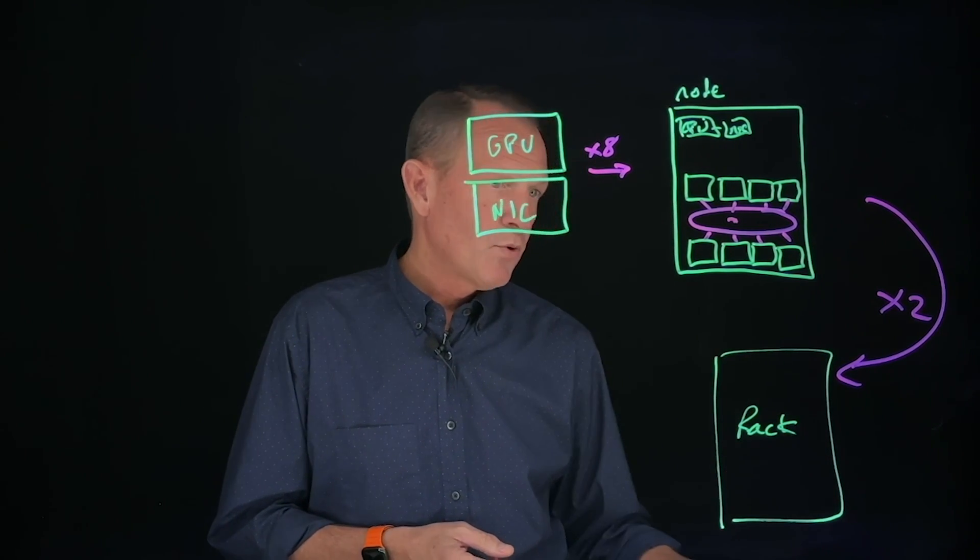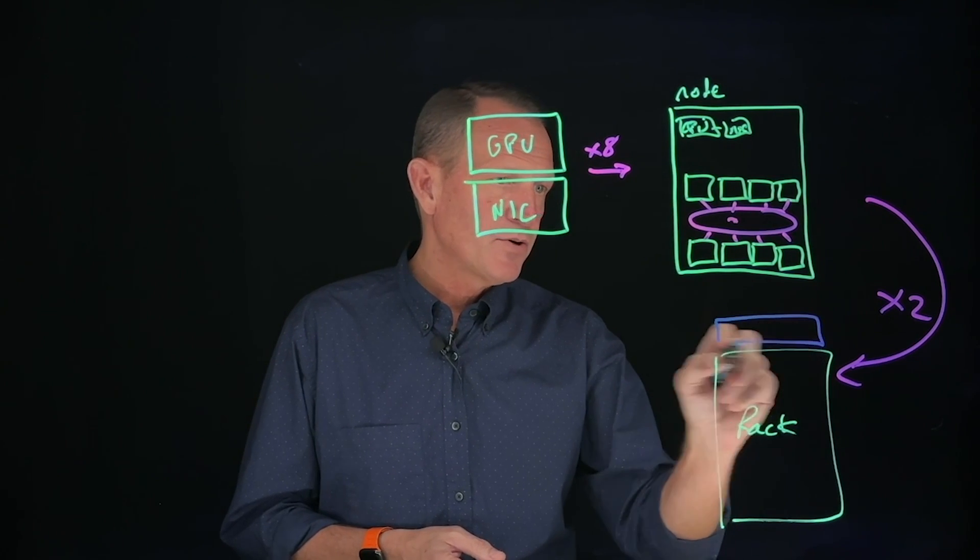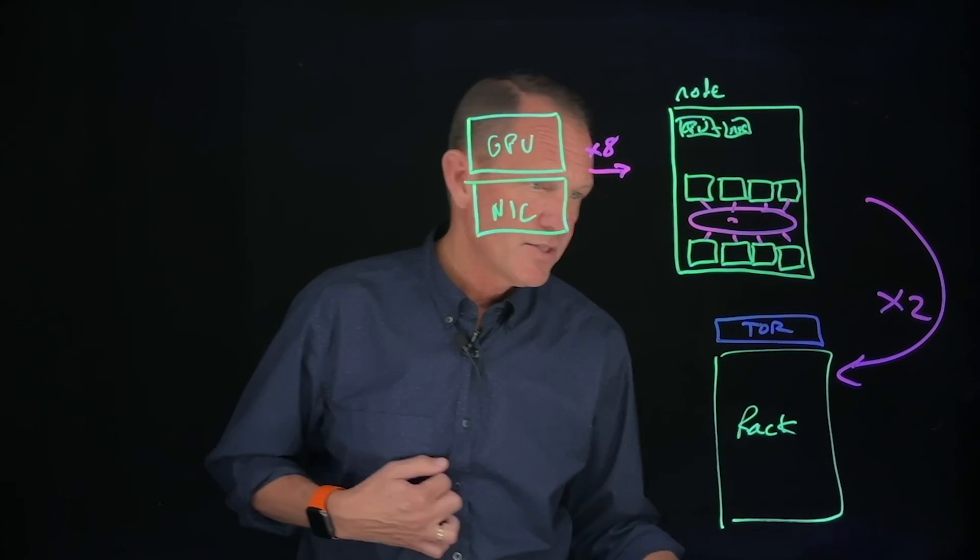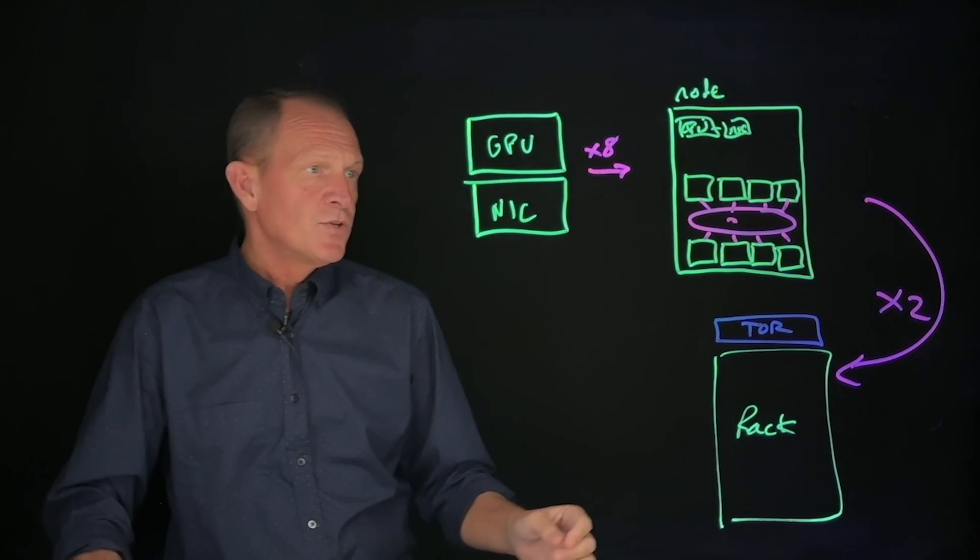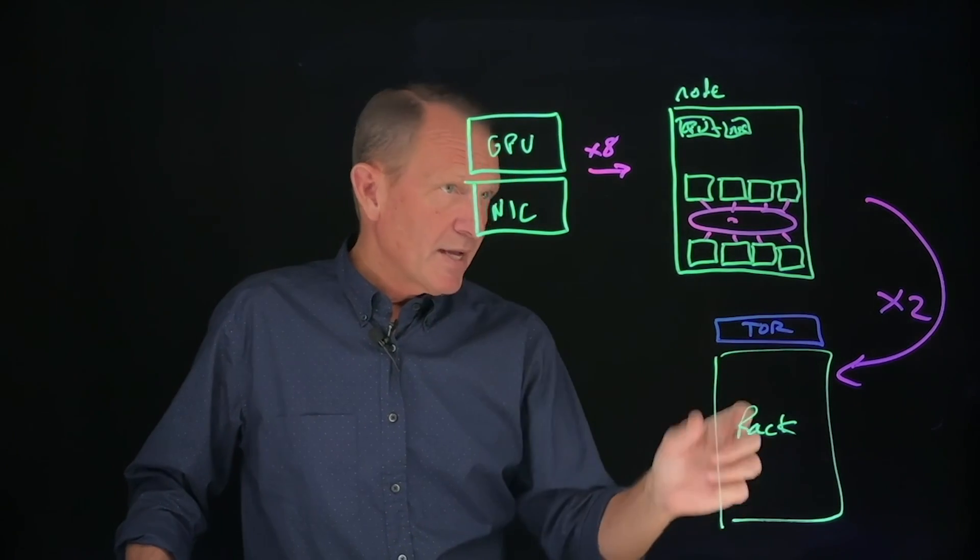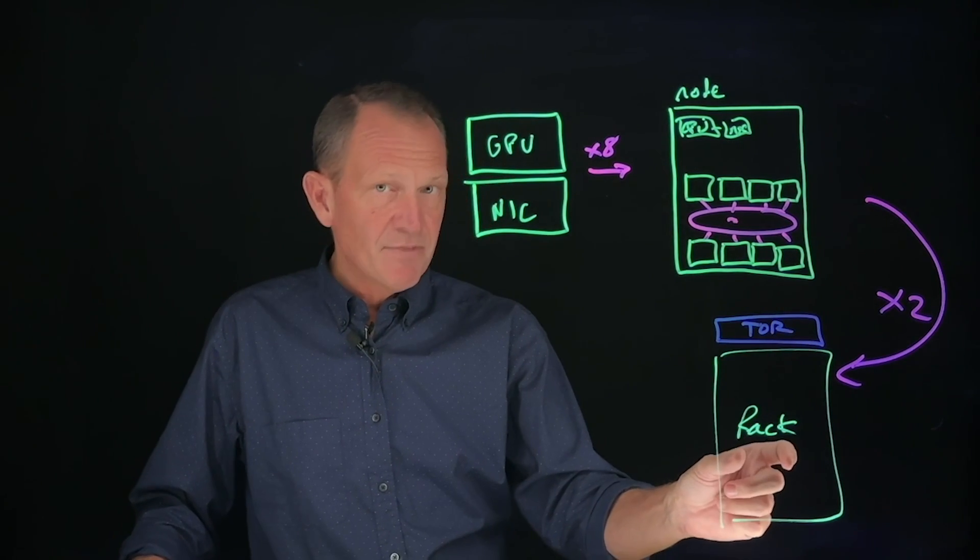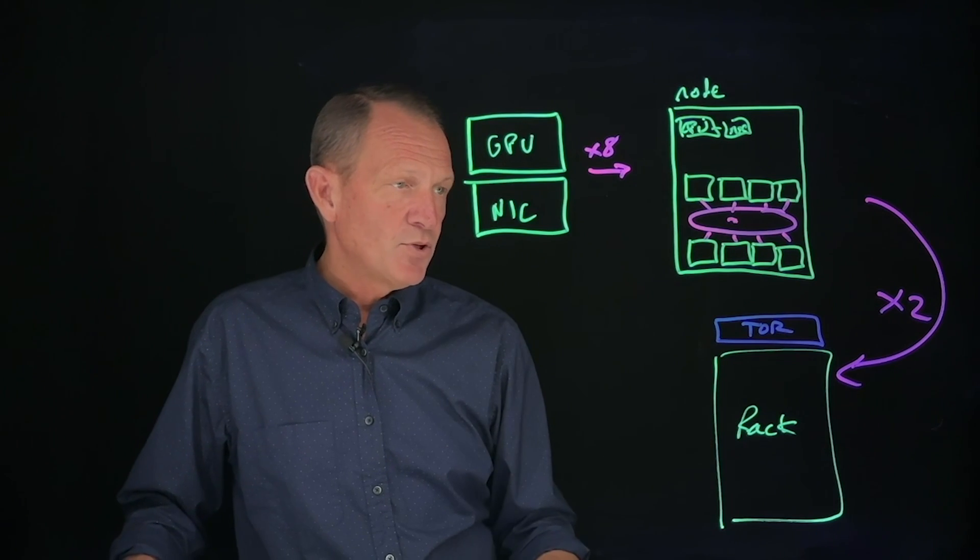We have to have some connectivity, so we start to add our networking. We have our top of rack switch - the Tor - and we can connect each of these NIC cards, all 16 of them in a typical design, up to the Tor.